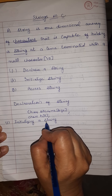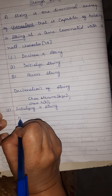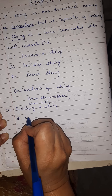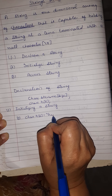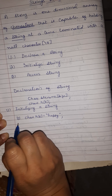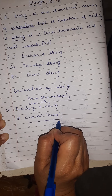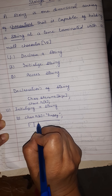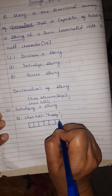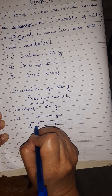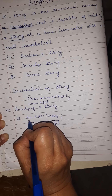Next is how to initialize a string. There are different ways to initialize a string. The first method is: char h[6] = "happy". When you declare or initialize your string like this, the compiler will automatically create 6 spaces — for h, a, p, p, y, and one for the null character. These correspond to h[0], h[1], h[2], h[3], h[4], and h[5].